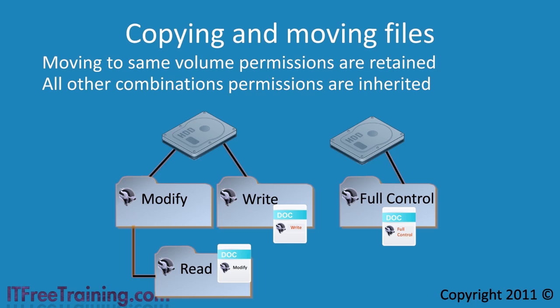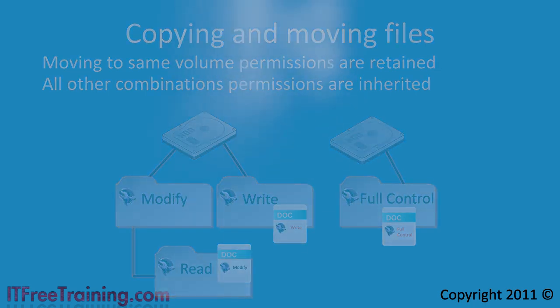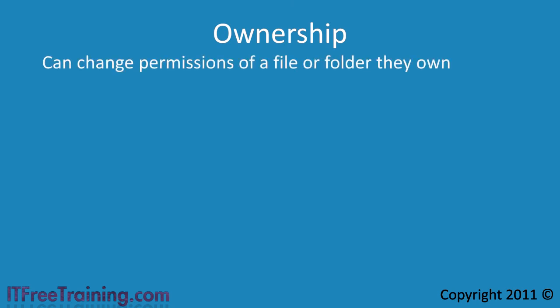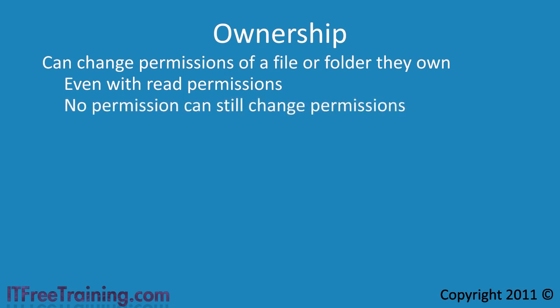Once you start copying, moving and setting permissions, you may accidentally lock yourself out of a file. Windows comes with a kind of back door when this occurs. Every file and folder on the system has an owner. The owner of the file has the ability to change permissions of any file or folder that they own. For example, if you only have read access but you are the owner, you can change the permissions of the file to give yourself access. Even if you remove all your access and have no permissions at all, if you are the owner you can still give yourself access.